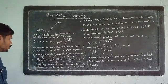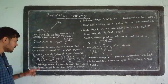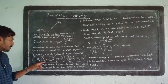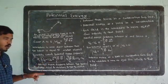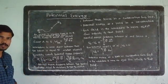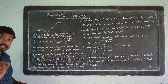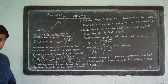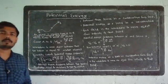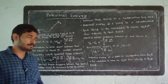In the potential energy case, the work done to move an object from A to B is equal to the potential energy at initial position A minus the potential energy at final position B.